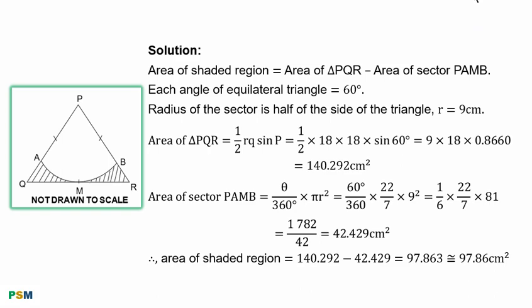Solution. Area of shaded region is equal to area of triangle PQR minus area of sector PAMB. Each angle of equilateral triangle is equal to 60 degrees.